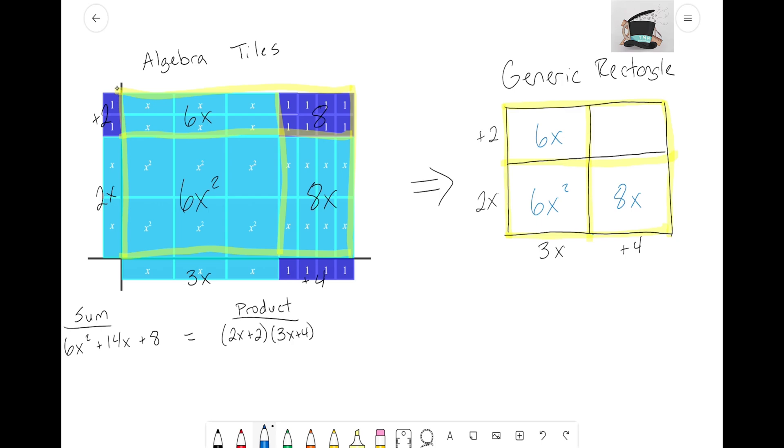Last but not least, up here when we had two unit tiles up here in the top left, four unit tiles in the bottom right, when you multiplied them together it formed a plus 8.